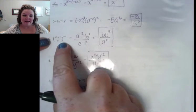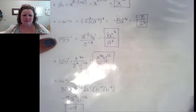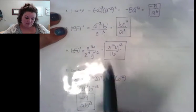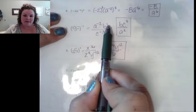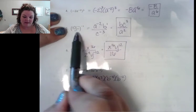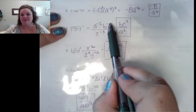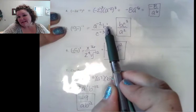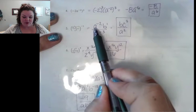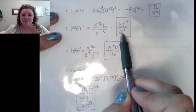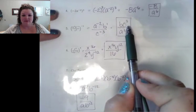Number 5: we're distributing the negative 1 to everything's exponent. Negative 1 times 2 gives us a to the negative 2. Negative 1 times negative 1 gives us b to the first power. Negative 1 times 3 gives me c to the negative 3. For b to the 1, I don't have to write the exponent of 1. Then my a to the negative 2 goes down to the denominator to make it a positive 2, and my c to the negative 3 gets brought up to make it a positive exponent.